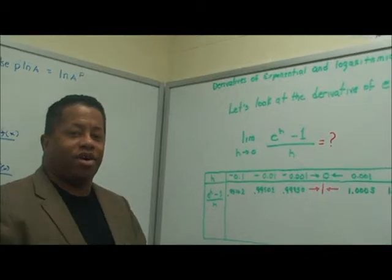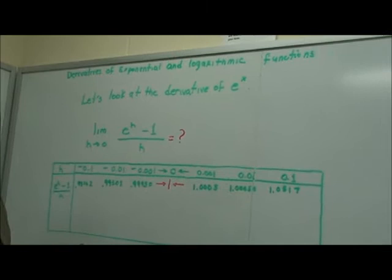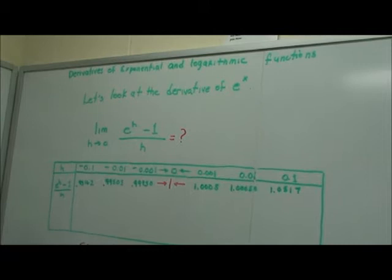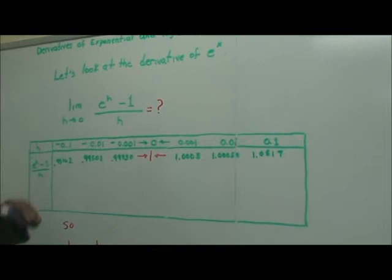Hello and welcome to part one of finding the derivatives of exponential and logarithmic functions. Let's look at the derivative of e to the x. For e to the x, there's an expression we want to evaluate: the limit of e to the h minus 1 divided by h as h approaches 0.